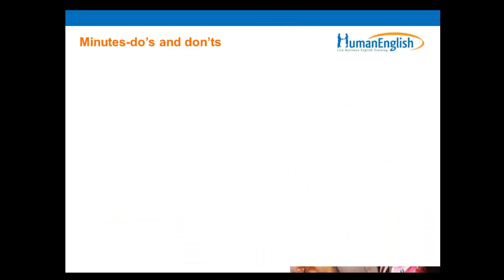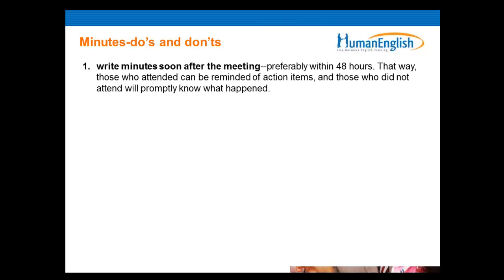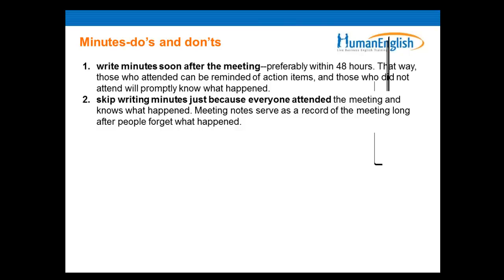There are some do's and don'ts about minutes of a meeting. Let's look at them and you can write in the chat box if you think it is a do or a don't. Number one: write the minutes soon after the meeting, preferably within 48 hours — that way those who attended can be reminded of action items and those who did not attend will promptly know what happened. Guente, Olga, and Peri say 'do' — that is correct. The minutes should always be written soon after the meeting. Number two: skip writing minutes just because everyone attended the meeting and knows what happened. Meeting notes serve as a record of the meeting long after people forgot what happened. Gunther says 'don't' — that's correct, so you don't want to skip writing the minutes.